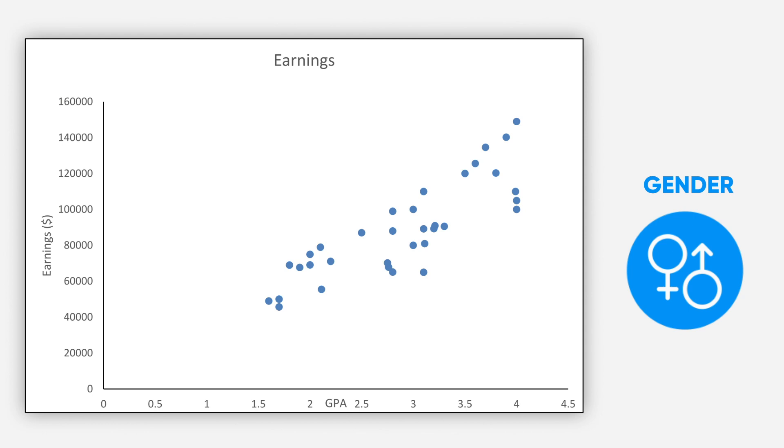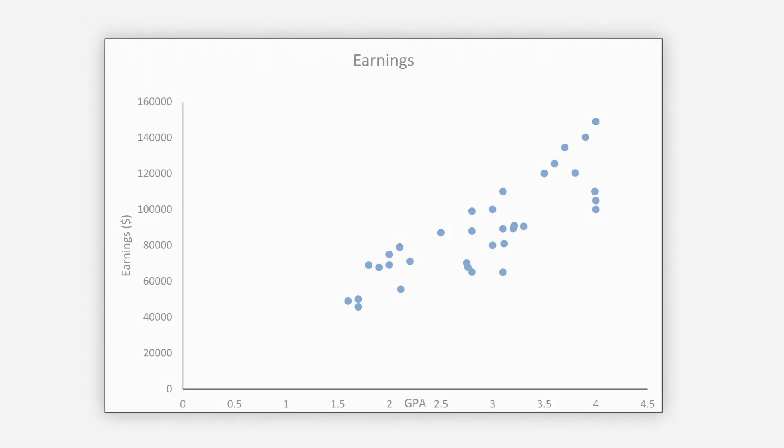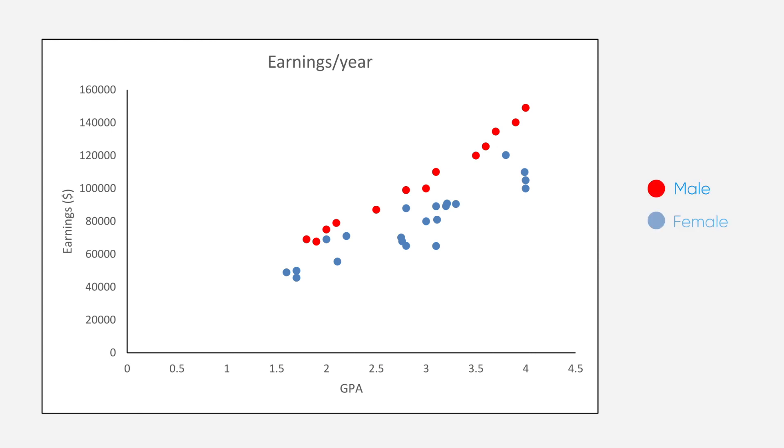Now we think that not only GPA but also gender could affect the salary. That means gender affects this result. On closer look, the graph would actually look like this, where red dots are male and blue dots are female.